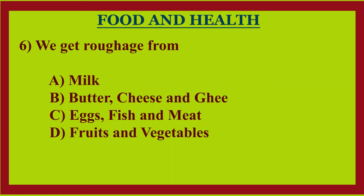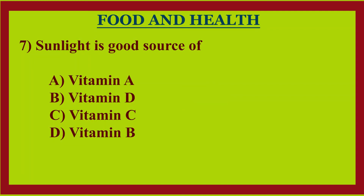Sixth question: we get vitamin C from — option A: milk, option B: butter, cheese, and ghee, option C: egg, fish, and meat, option D: fruits and vegetables. Answer: option D, fruits and vegetables.